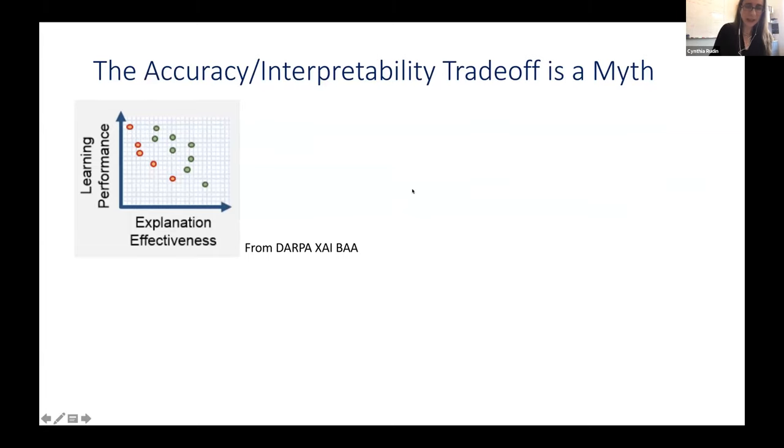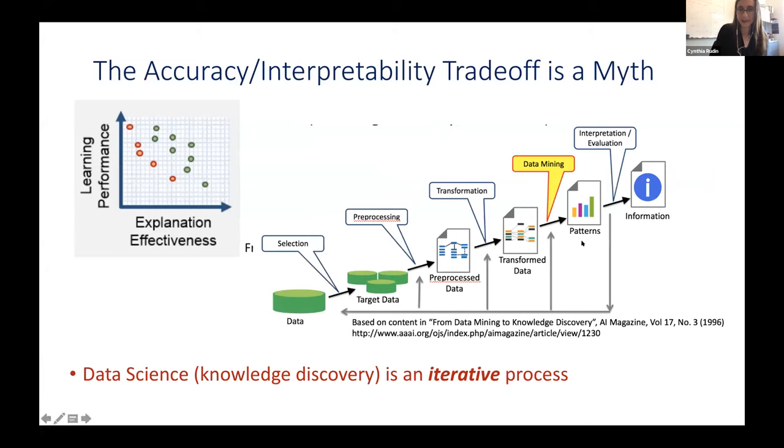If this plot is for a static data set, I would argue that there's no high stakes decision or case where you're troubleshooting your model where you have a static data set. Data science or knowledge discovery, as it used to be called, it's an iterative process. You're supposed to process the data, do data mining machine learning, and then interpret or evaluate your model, and then go back and change the processing and improve the whole system.